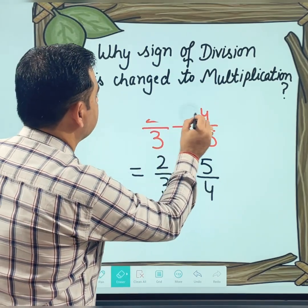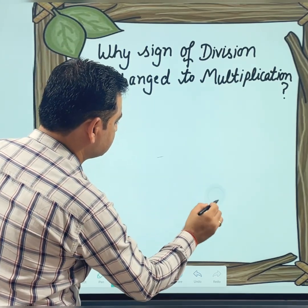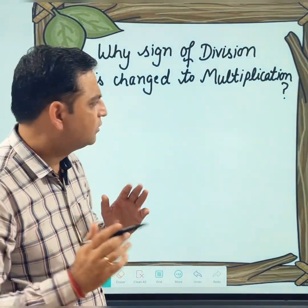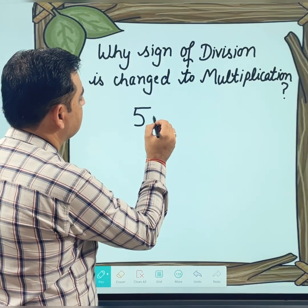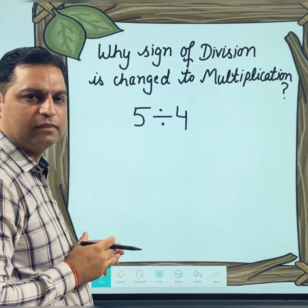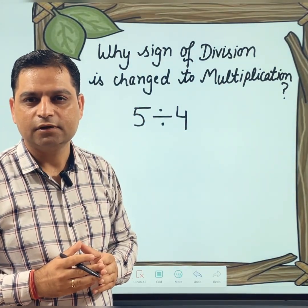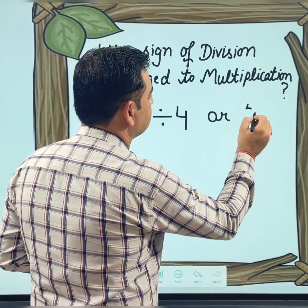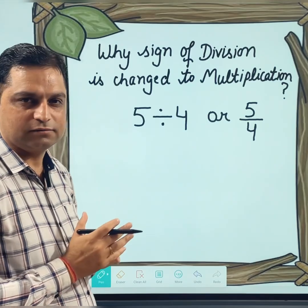Let me clean the board and let us focus — not on fractions as of now. I am going to write something simple: let's suppose 5 divided by 4. Just read this one. 5 upon 4, 5 over 4 — both represent the same thing.